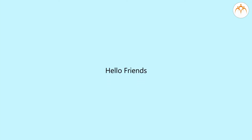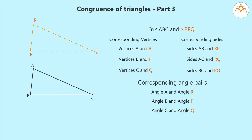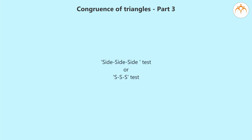Hello friends, in the previous part we saw that some specific pairs of sides and angles of congruent triangles are enough instead of considering all three pairs. We call these as the Side-Side-Side (SSS) test and the Side-Angle-Side (SAS) test of congruency of triangles. Let us see some more tests of congruency of triangles.